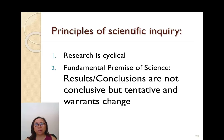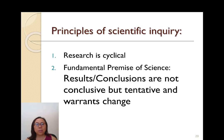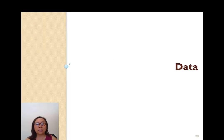Two principles of scientific inquiry to understand going forward: first, research is cyclical — as seen in the wheel diagram, it goes in circular motion and we learn from where somebody else left off to continue asking additional questions. Second, results and conclusions are not conclusive but tentative, and warrant change. When you come up with conclusions, they are for that particular study, but contradictory or different findings mean those conclusions need to be revisited and are not written in stone.